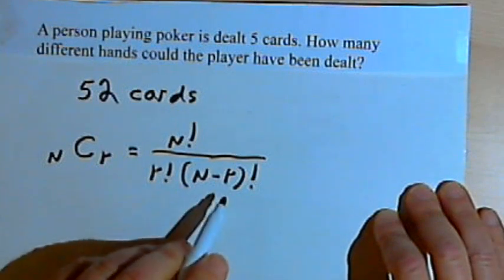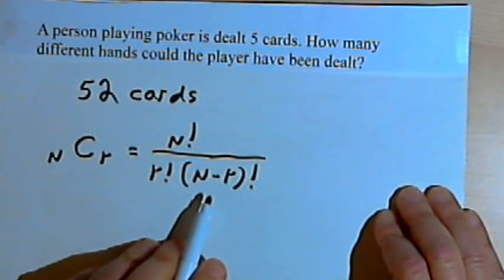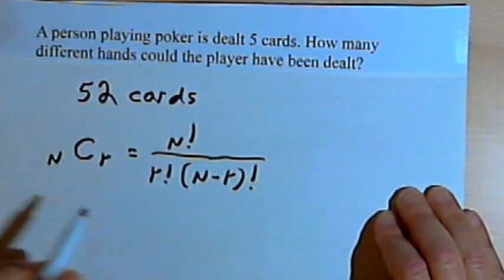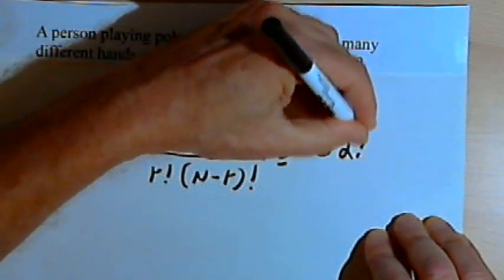And the n and the r are going to stand for the same things that they stood for in the nPr formula. So n is going to be the total number of objects. That's 52. So n factorial would be 52 factorial.